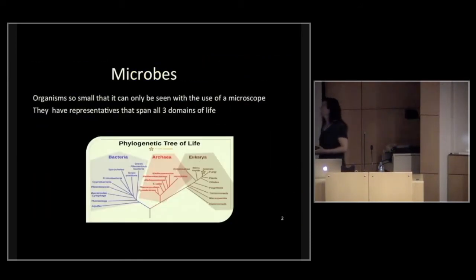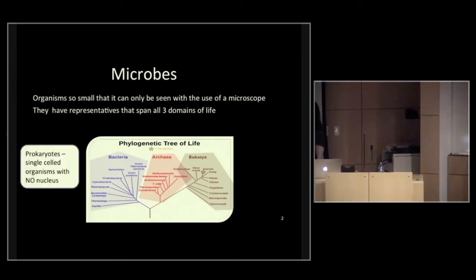Let's look at microbes on a very basic scale. How do we define that? Microbes are organisms that are so small that they can only be seen with a microscope. They have representatives that span all three domains of life. This is a phylogenetic tree, the phylogenetic tree of life. On the left side we have bacteria and archaea. Both of these are representatives of prokaryotes—single-celled organisms with no nucleus. And there's microbes in that division.